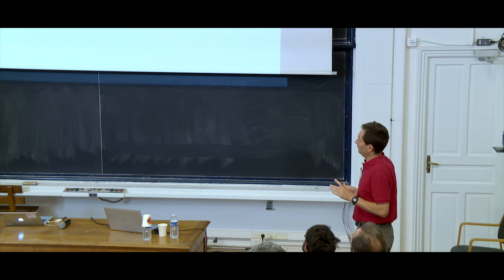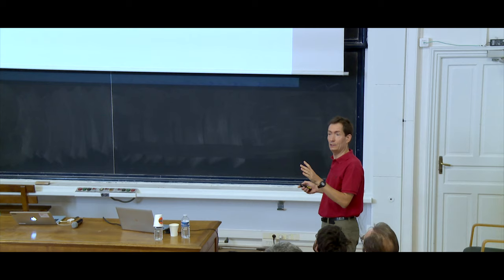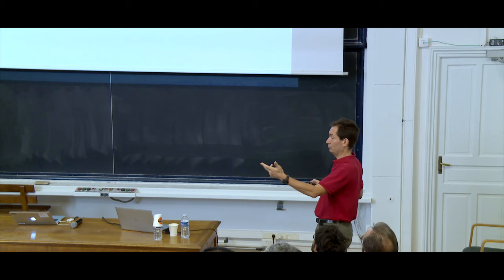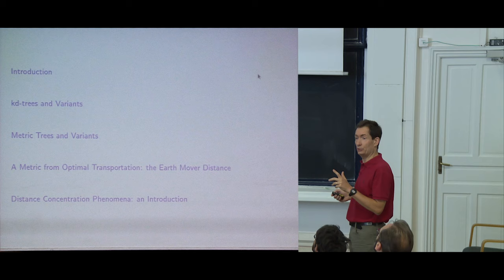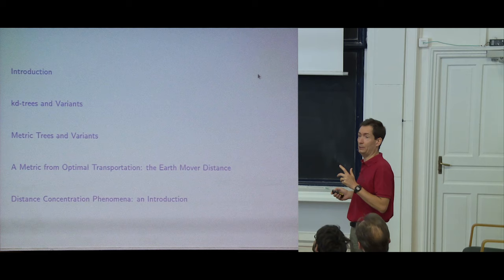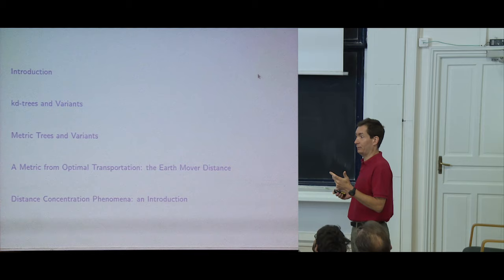I'll cover metric trees, which generalize KD trees in a simple and elegant manner. Then I'll discuss the earth mover distance — an interesting metric for comparing shapes coming from optimal transportation theory — and its connection to the Mallows distance for comparing distributions. Finally, a warning for those working in high-dimensional spaces: distances tend to concentrate, and the higher the dimension, the less meaningful the notion of distance.